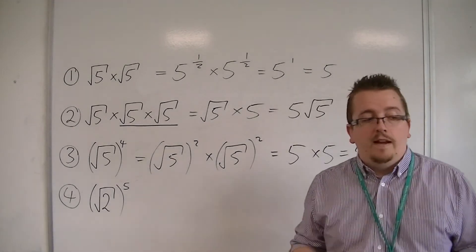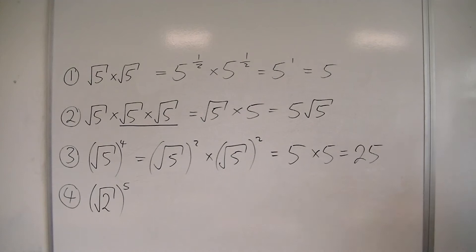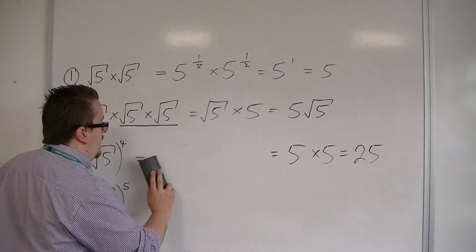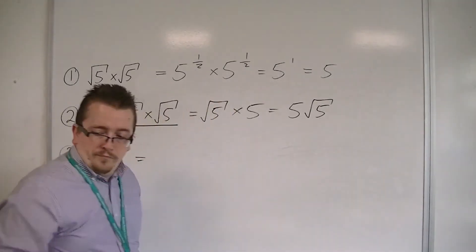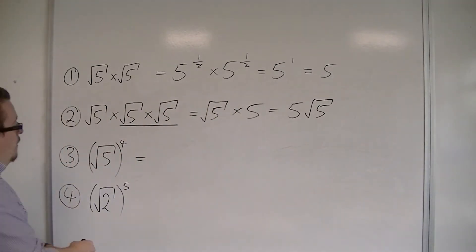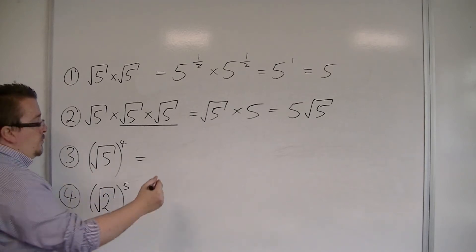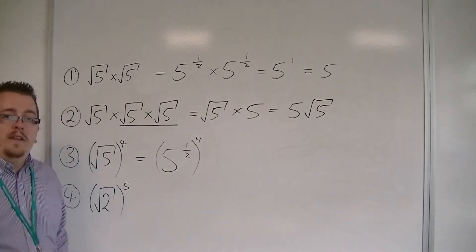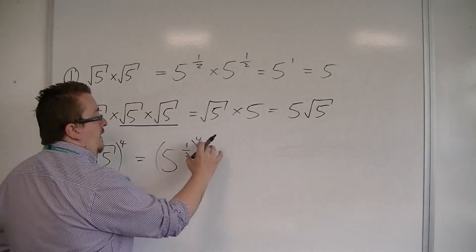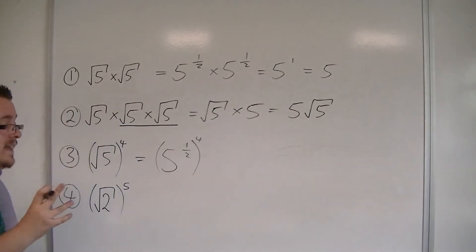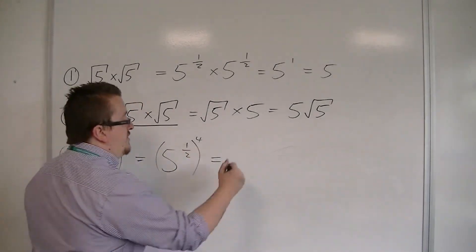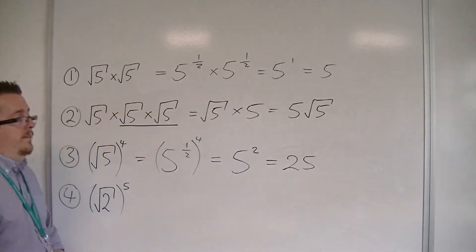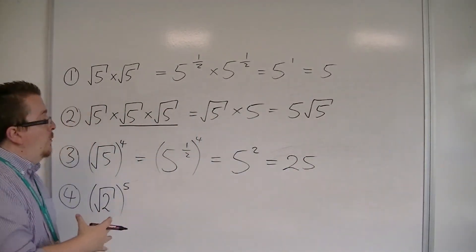You could see that in a slightly different way. You might think of root 5, which we know is 5 to the power of one half, and that is all to the power of 4. With our indices understanding, the half and the 4 can be multiplied together, giving one half times 4, which is 2. So you're left with 5 squared, which is 25 again. You could think of it that way if you prefer.